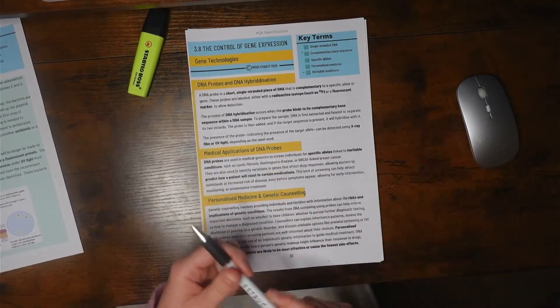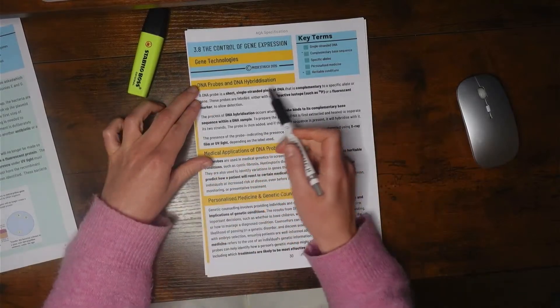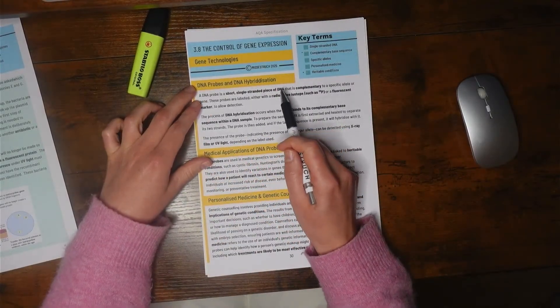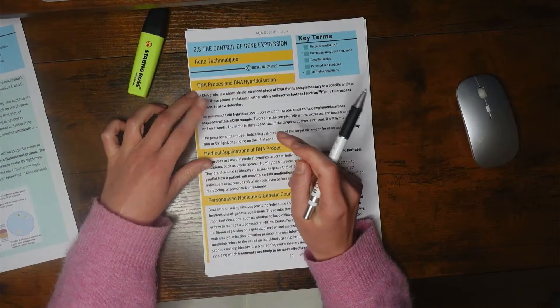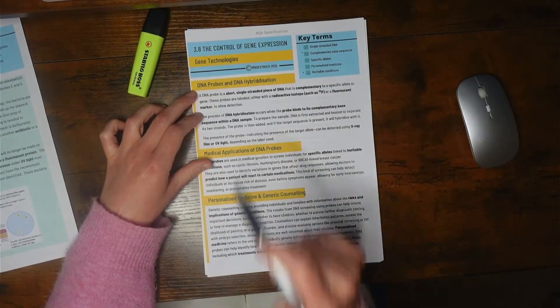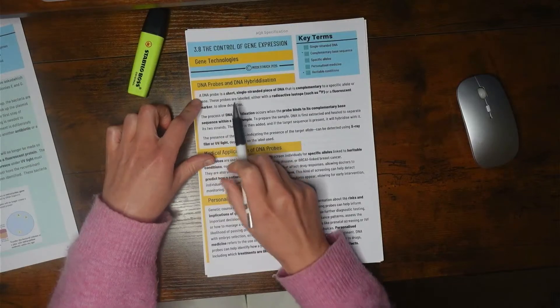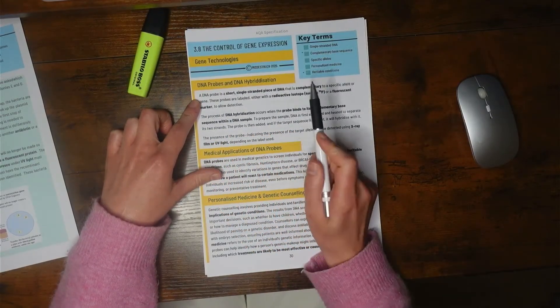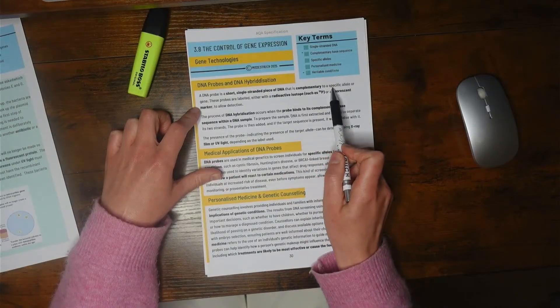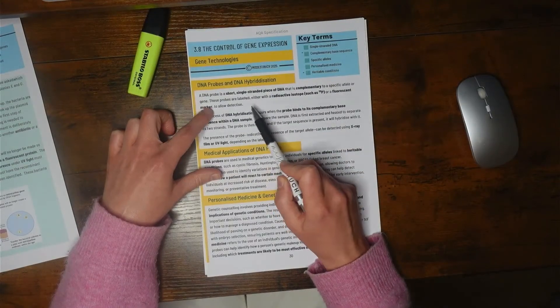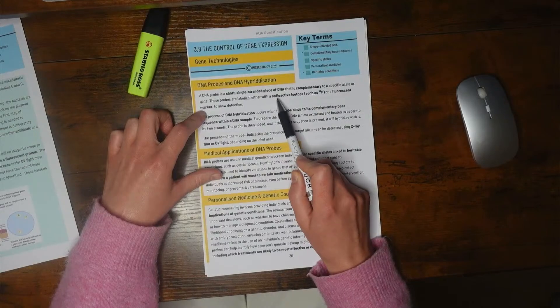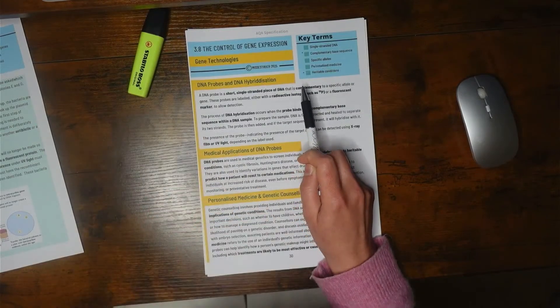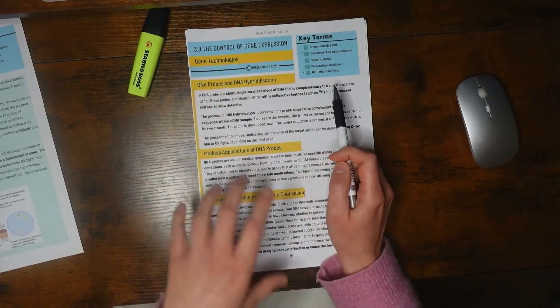A little bit of what we're going to be going through does link to the concept of DNA probes and DNA hybridization. You do need to know the definition of a DNA probe, and that is a short single-stranded piece of DNA complementary to a specific allele. DNA probes are often labeled with a radioactive isotope or fluorescent marker so that you can attach and locate that DNA.